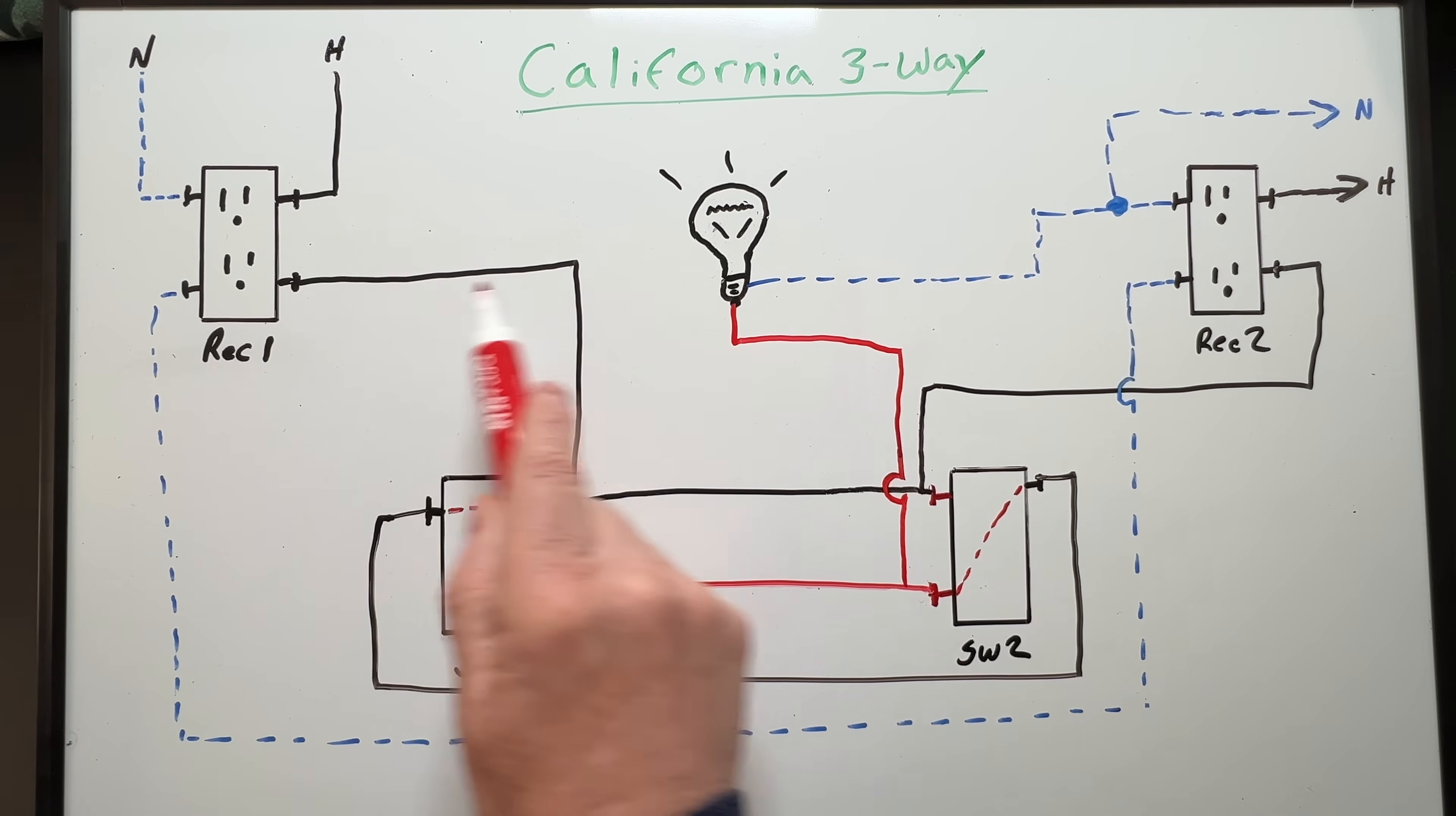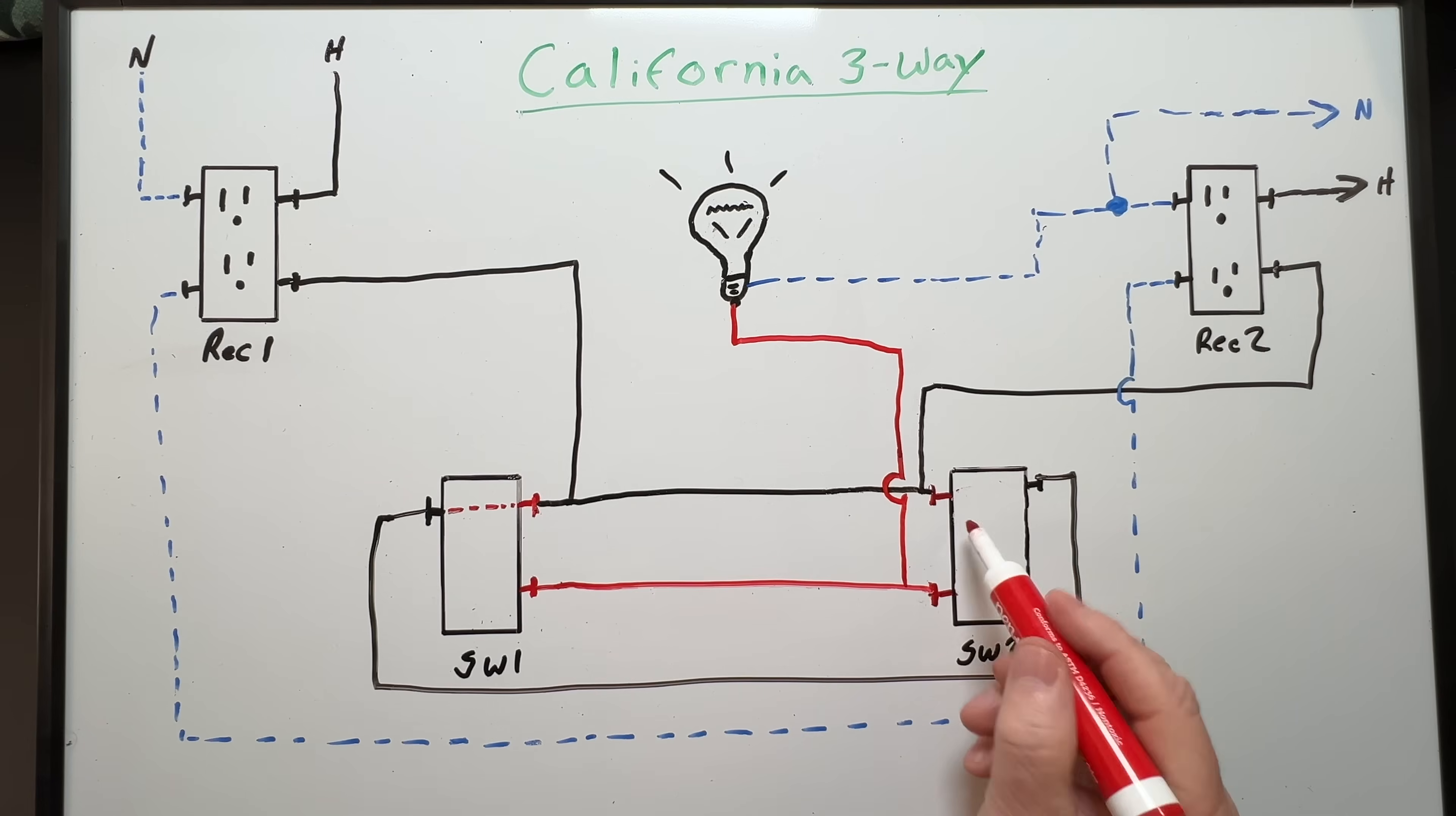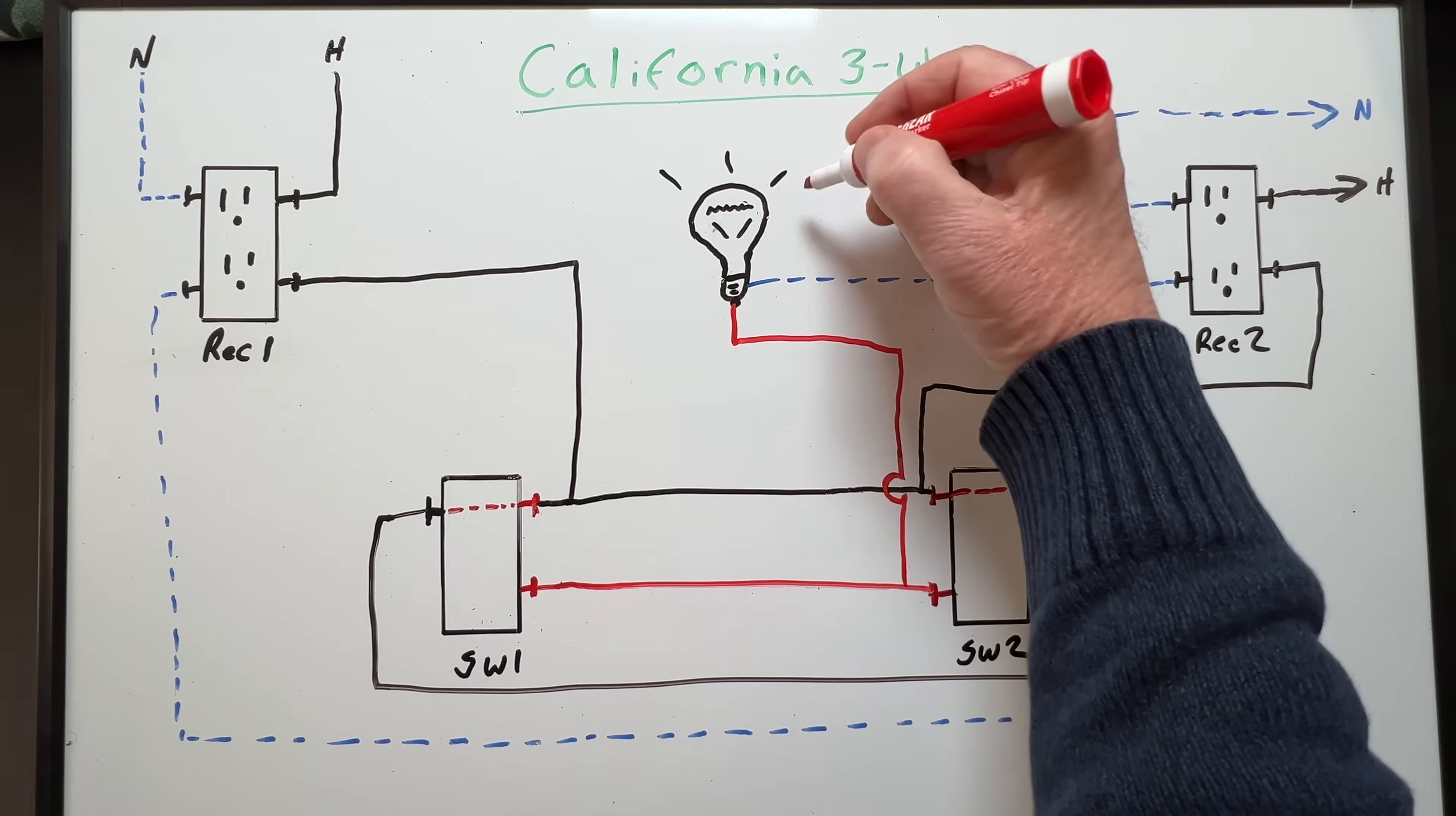So our hot wire comes down from receptacle one to switch one through switch one across the black wire over to switch two through switch two and then up to our light. Our neutral returns current back to the source so we have a complete circuit and our light will be on. Now let's move switch two to the up position. This time our power comes down from the receptacle again through switch one across to switch two through switch two and then back to switch one again so we have a loop here. The power doesn't make its way up to our light so the light will be switched off.